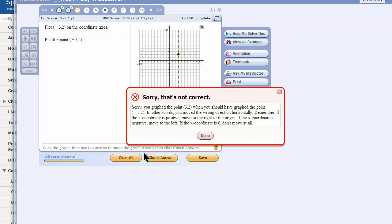Oops! Sorry, that's not correct. And I am told what I did wrong. It tells me I graphed the point (3,2), when I should have graphed the point (-3,2). It says, in other words, you move the wrong direction horizontally. This is a pretty smart computer. Alright, let me try again.